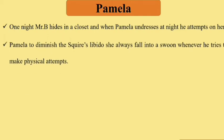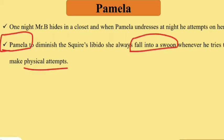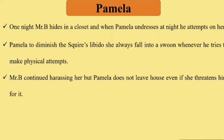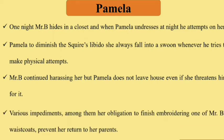One night Mr. B hides in a closet and when Pamela undresses at night he attempts to assault her. However, Pamela's fainting helps diminish the squire's libido — she always falls into a faint whenever he tries to make a physical attempt.